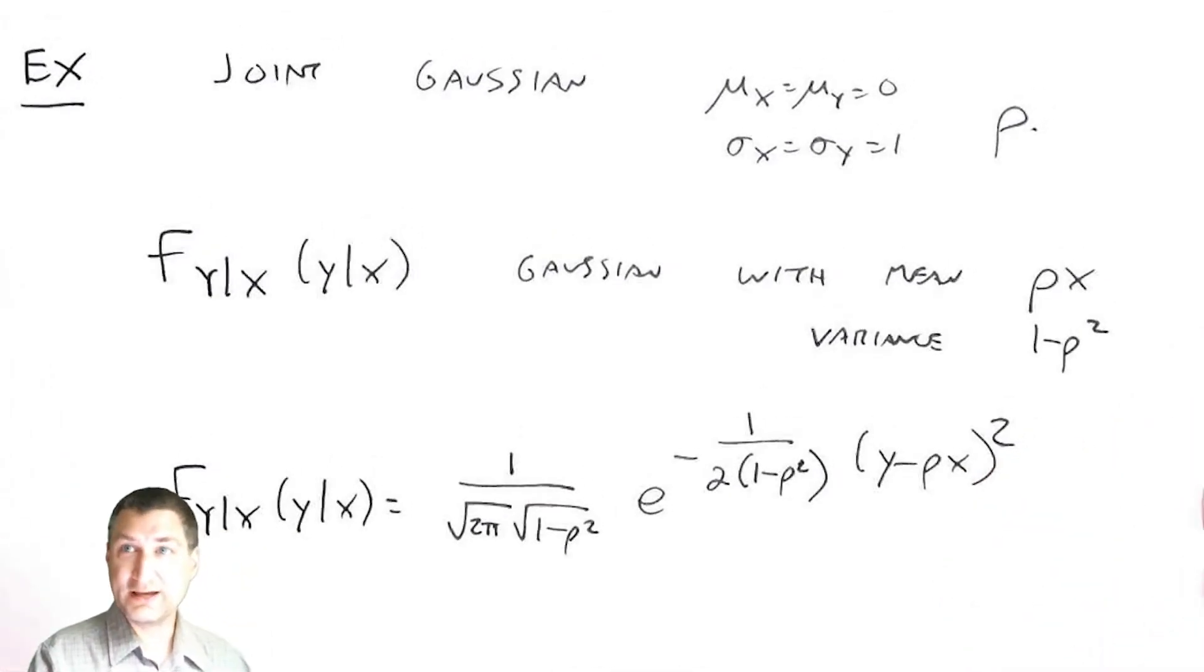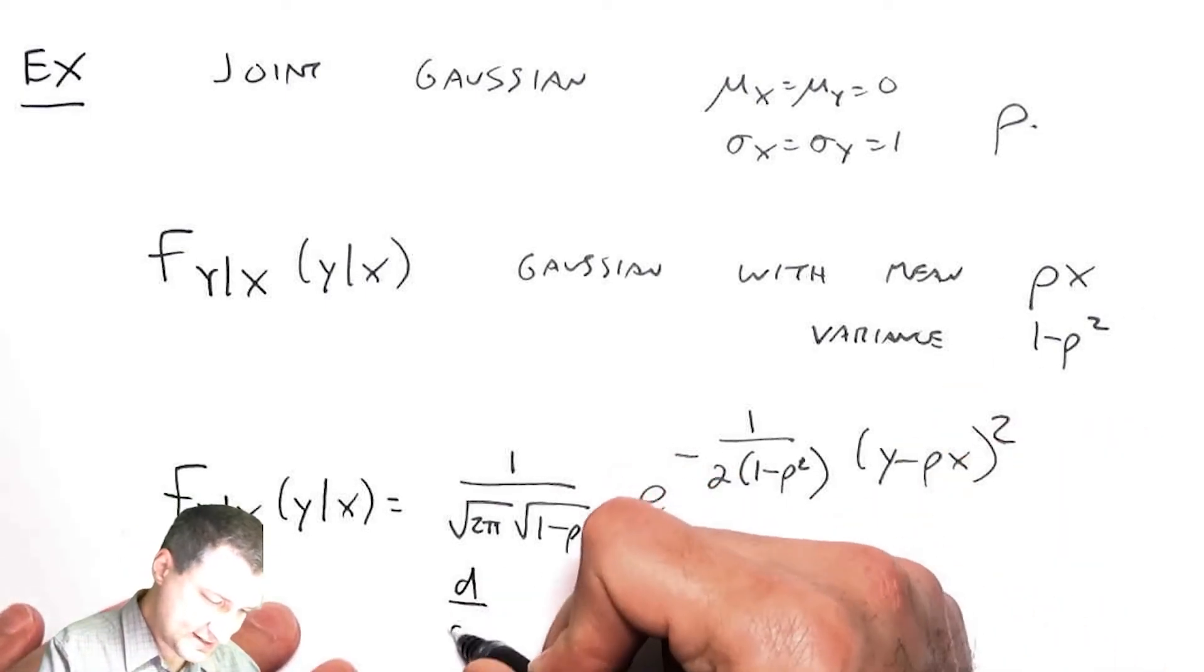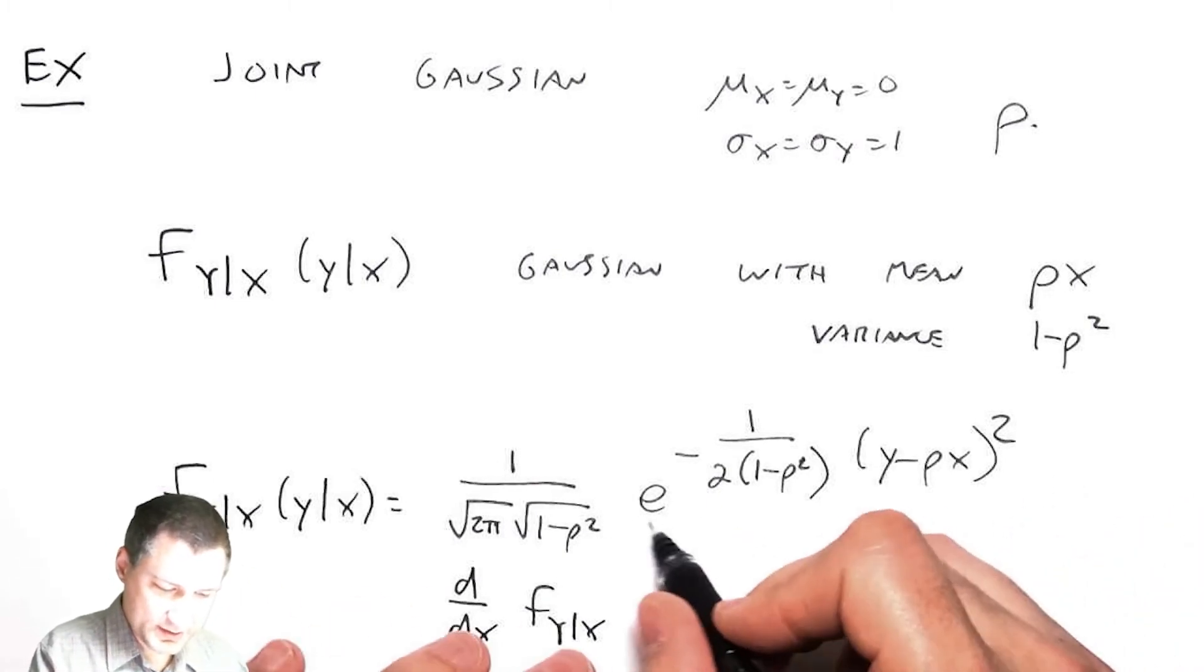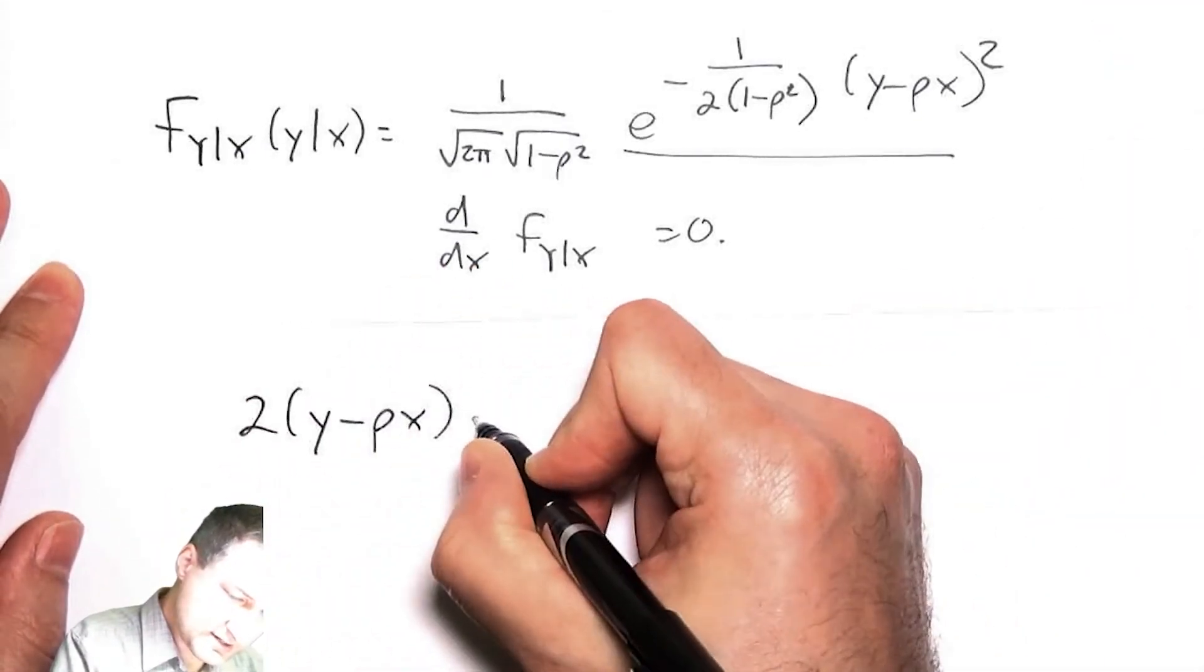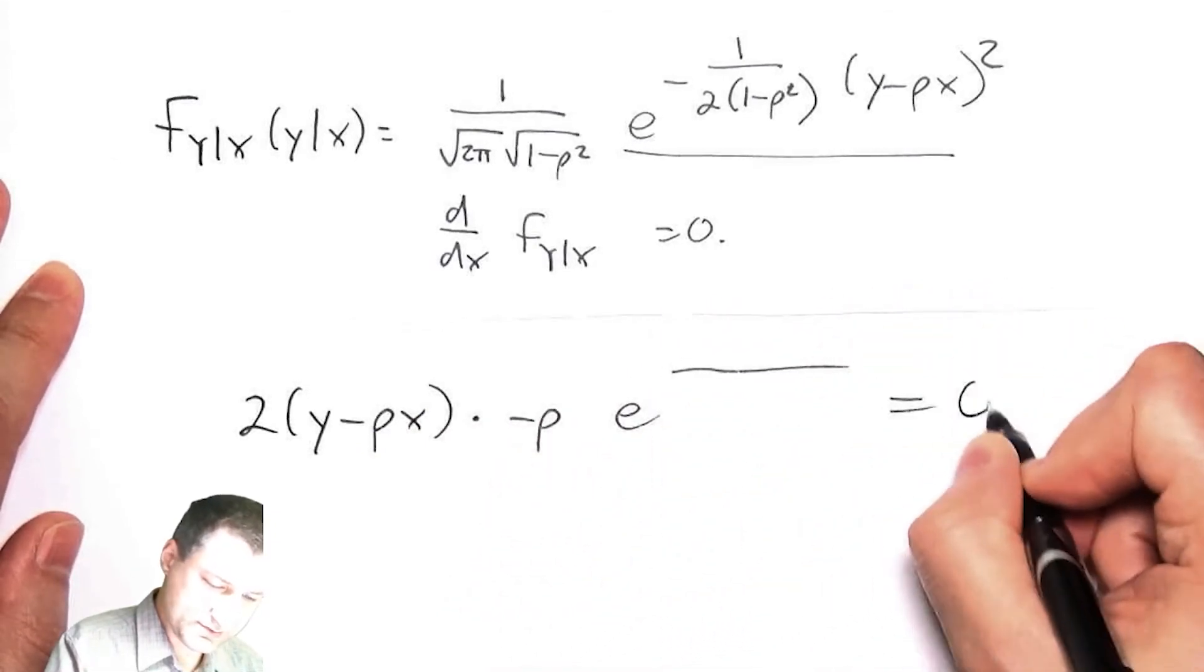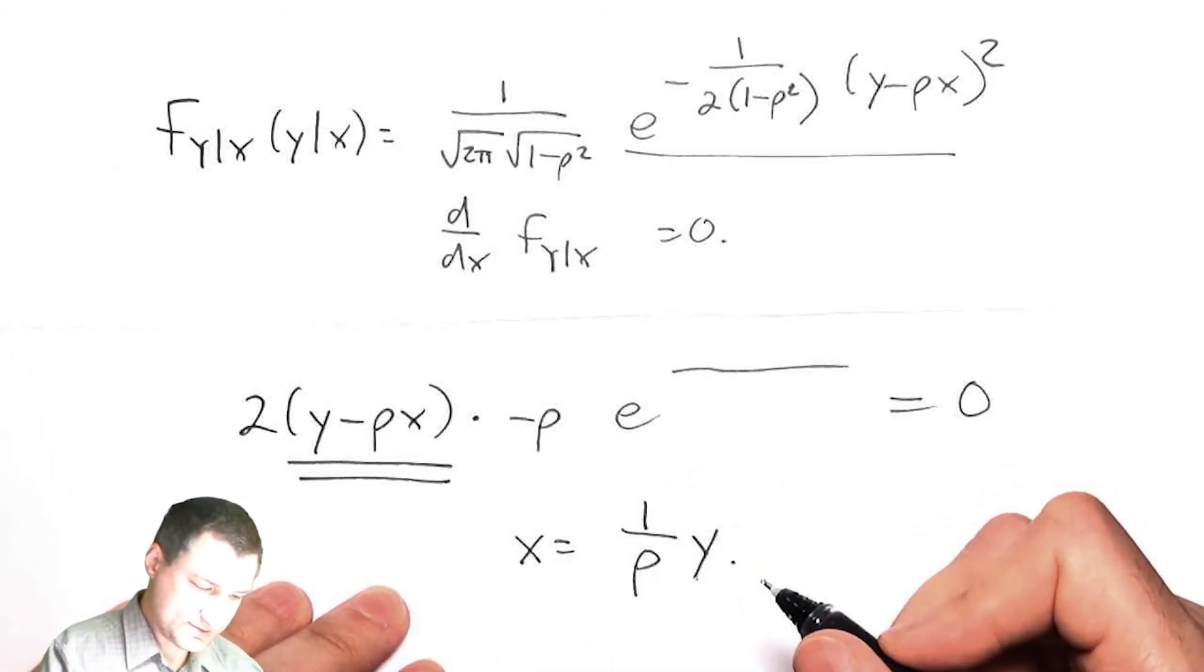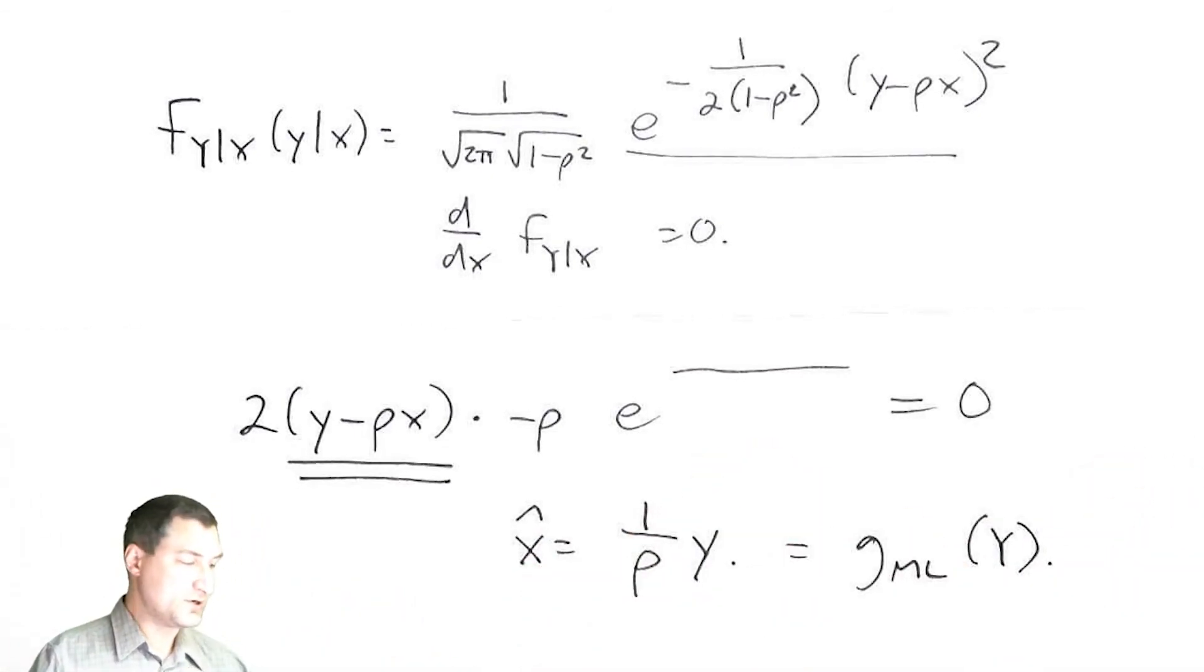Now I need to find the x that maximizes this. I can't just read it off—I have to actually take the derivative with respect to x. Taking d/dx of this and setting equal to zero, the operative thing is what happens when I take the derivative up here: it's going to be two times (y minus rho x) times minus rho times e to the whatever. Setting equal to zero, I choose x to be one over rho times y. This is the maximum likelihood estimate. This is definitely not the same as the MAP estimate, which was rho y.